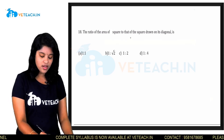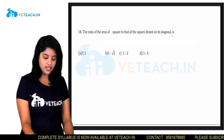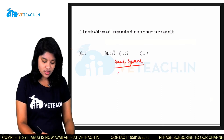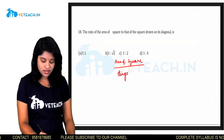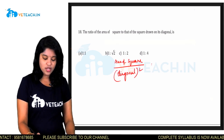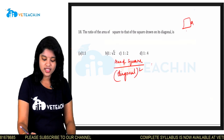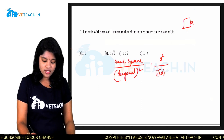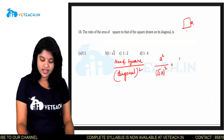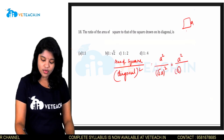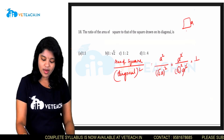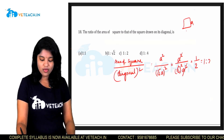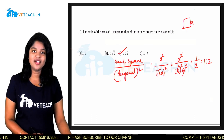The ratio of area of a square to that of the square drawn on its diagonal is — if the side of the square is A, then the area is A² and the diagonal is √2·A. The area of the square on the diagonal = (√2·A)² = 2A². Ratio = A²/(2A²) = 1/2. The ratio is 1:2. Option C is our correct answer.